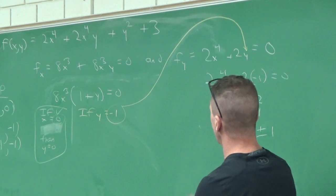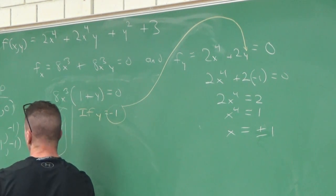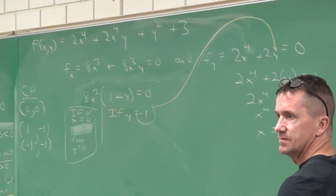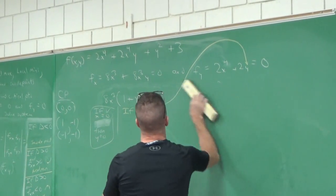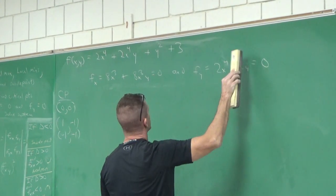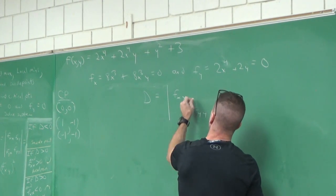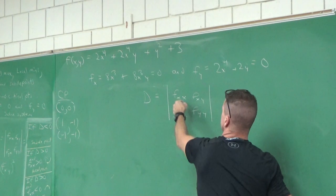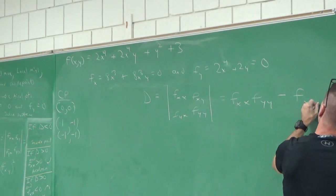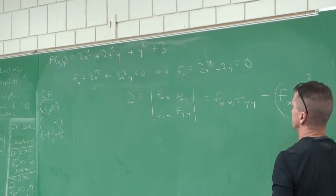We've got all the math done. Now we've got to deal with the determinant. Are these saddle points, local maxes, or local mins? We'll find out. Let's go find the determinant. D equals fxx·fyy minus fxy squared. These are all second partial derivatives.